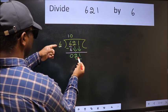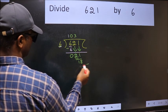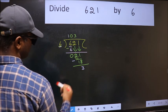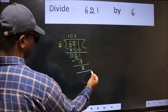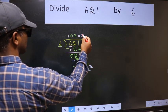A number close to 21 in the 6 table is 6 times 3 is 18. Now we should subtract. We get 3. No more numbers to bring it down, so we stop here. This is our remainder and this is our quotient.